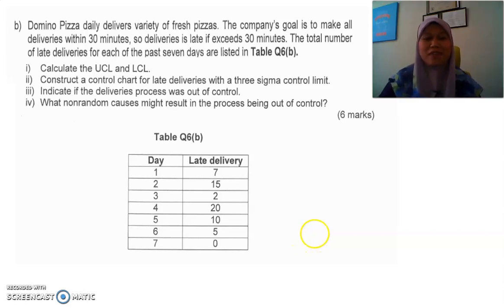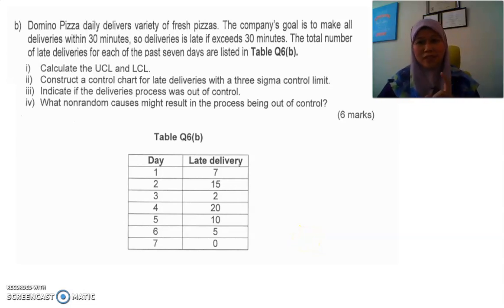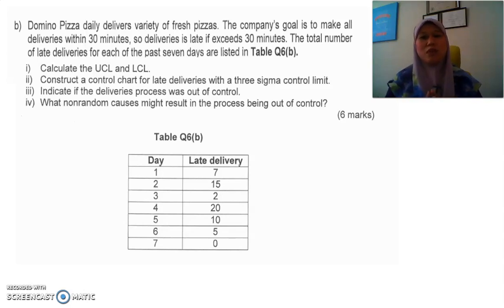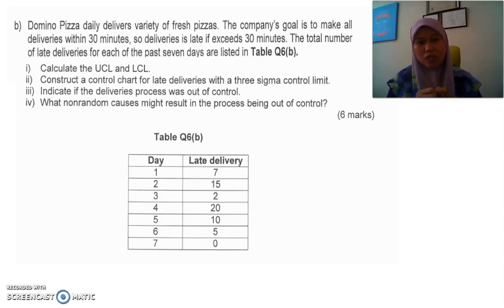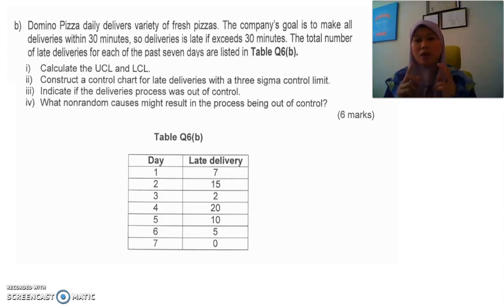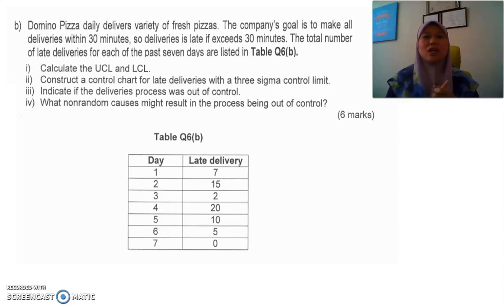Assalamualaikum and hi everyone. Today we're going to do control charts. For this time we're going to do the attributes chart. In attributes charts we have two types: the first one is the p-chart, which I showed in the previous video, and now I want to show you the c-chart. The c-chart is a counting chart — it's very easy.